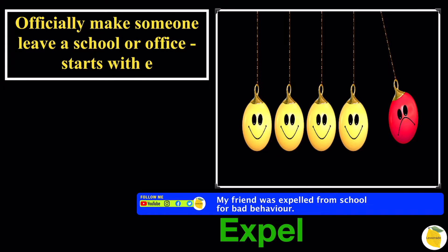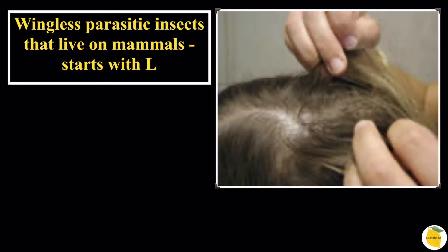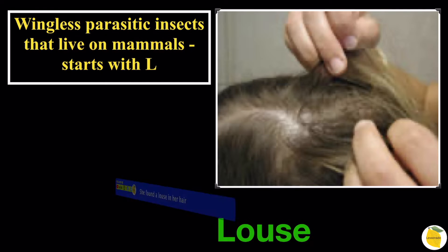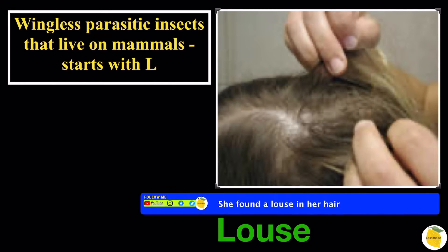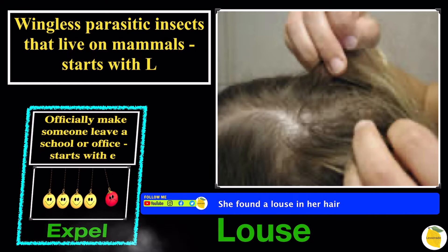Wingless parasitic insects that live on mammals — starts with L. In this picture we can see parasitic insects living on this person's hair, so the word is going to be 'louse'. The sentence is: she found a louse in her hair. Let's recall the previous slide: expel.